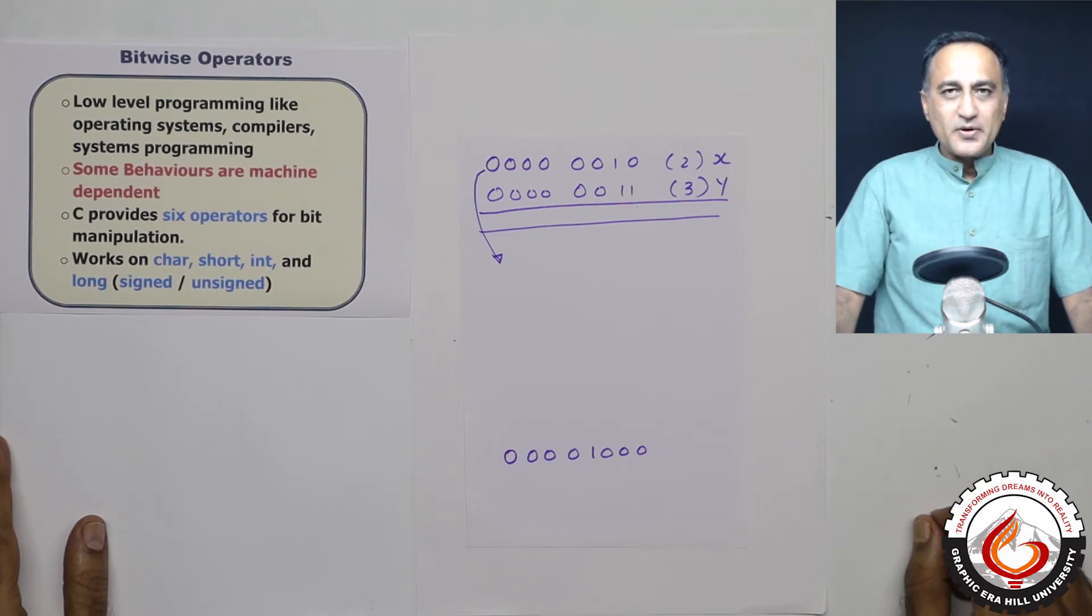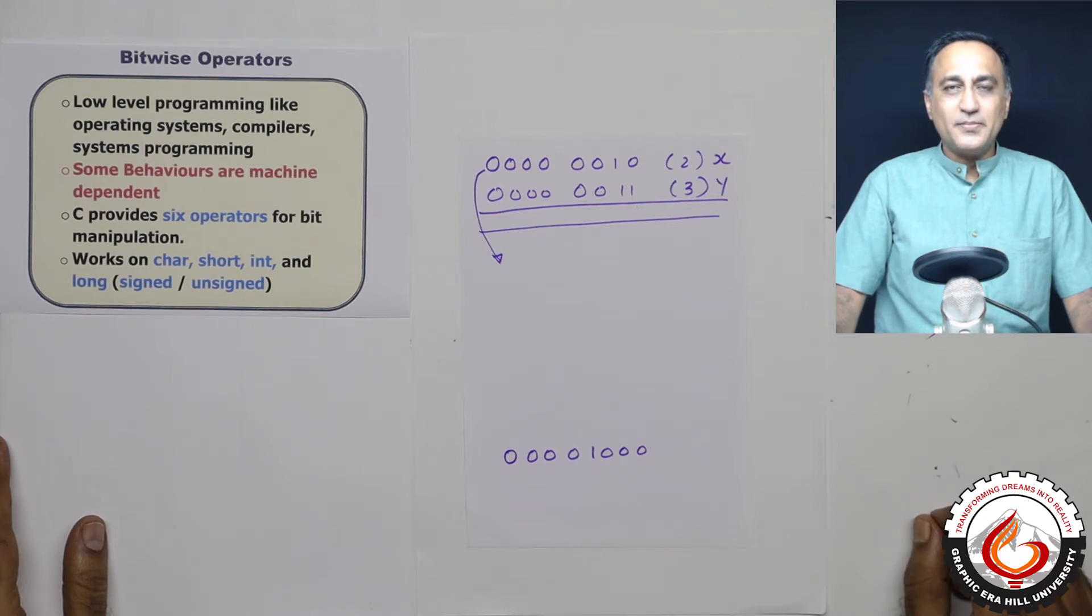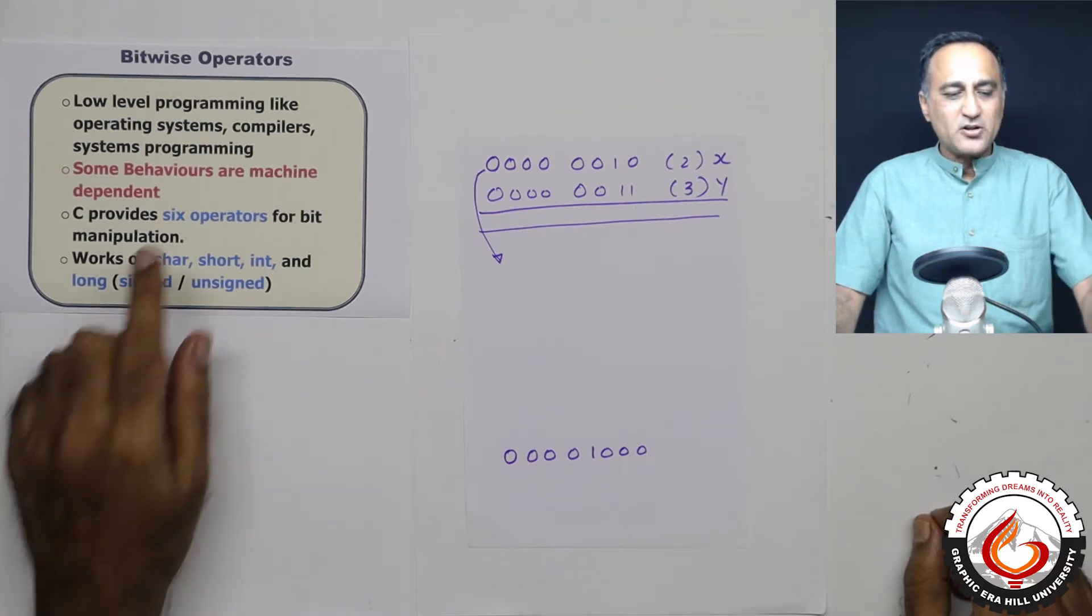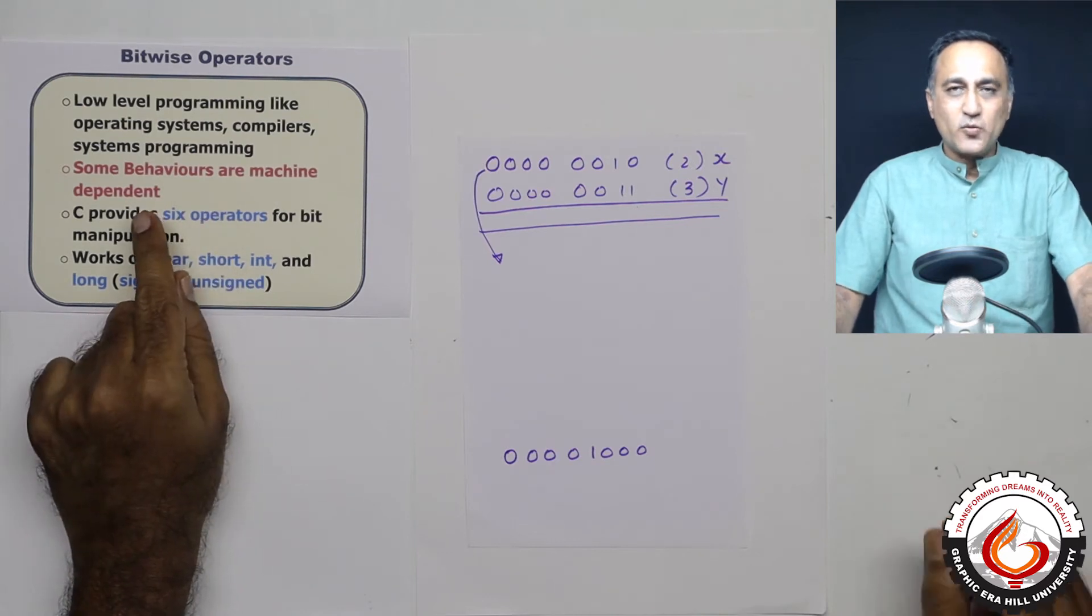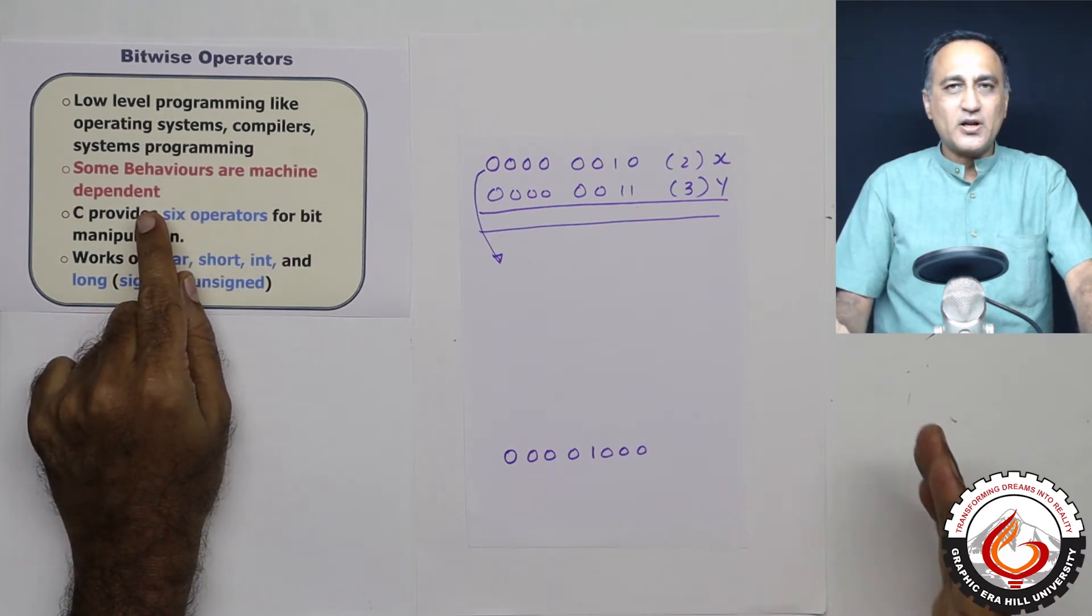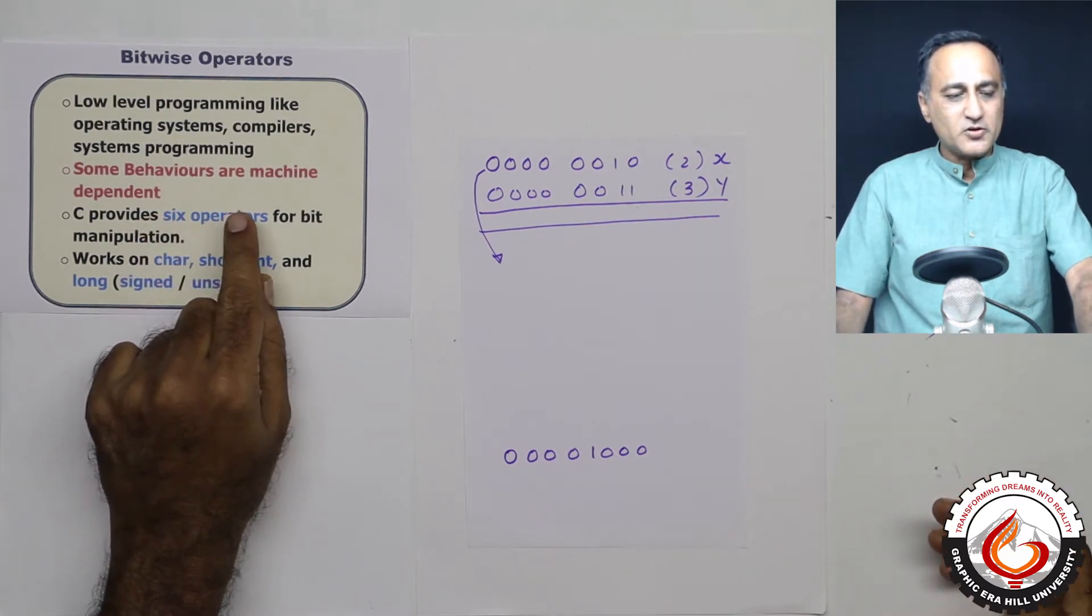With bitwise operators, you need to be careful. Some of the behavior or output of the bitwise operators depends on the machine or hardware. On one machine it could give you one output, on another machine it could give you another output. C leaves it to the compiler and hardware to determine what output is going to come.